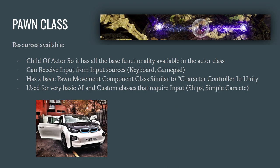The next class is the Pawn class, which is a child of the Actor. So it has all the base functionality of the actor — it can be spawned or placed in the level and has replication built in. But it can also receive input from sources like a keyboard or gamepad. It also has a basic pawn movement component similar to the character controller component in Unity, letting you adjust values for move speed, jump height, and things like that — though it's at a very basic level. This class is used for things like AI or custom classes that require input like ships and cars. It can also be possessed by a controller, meaning you can control it.